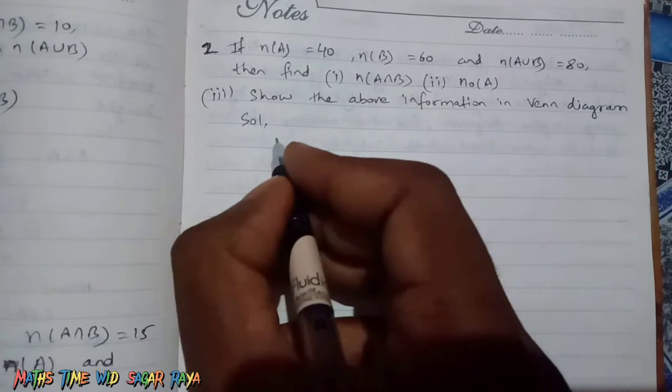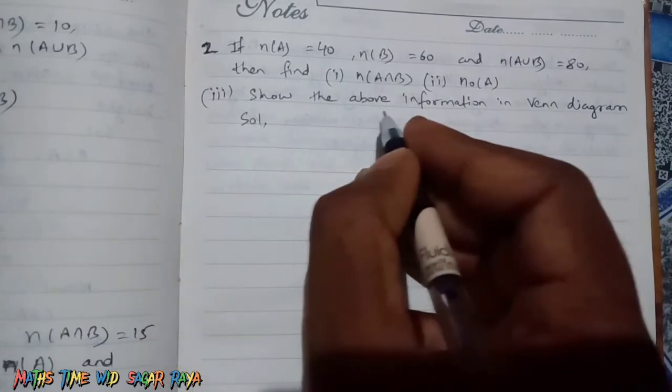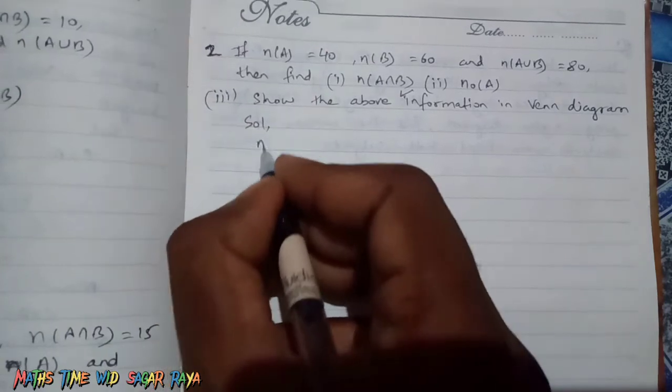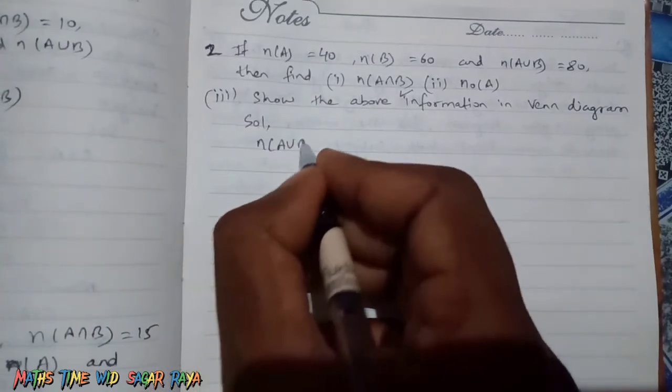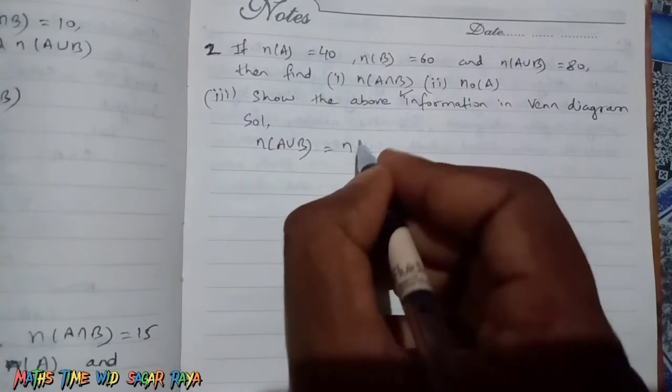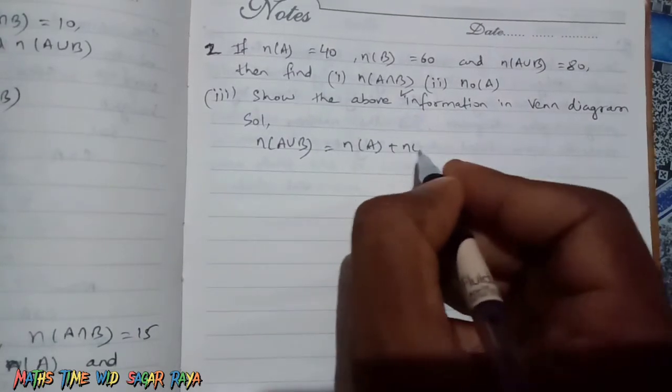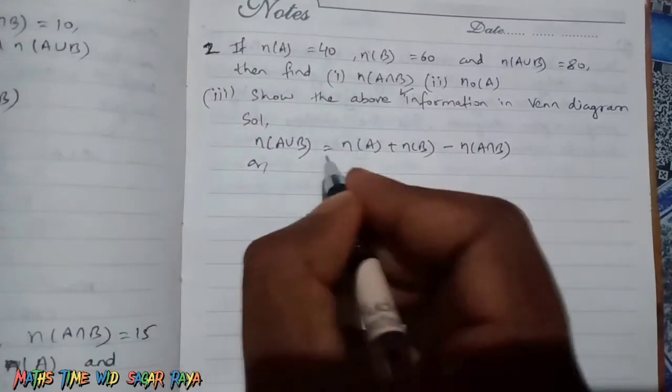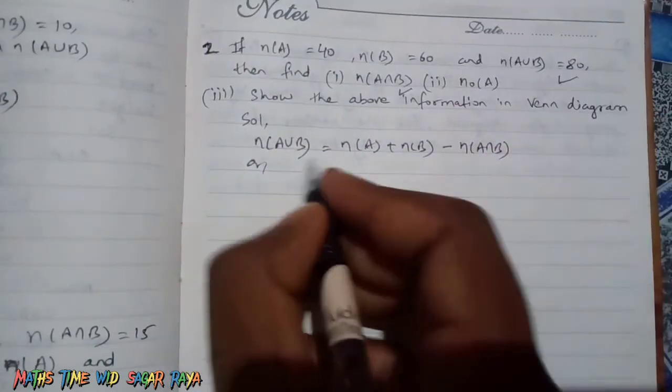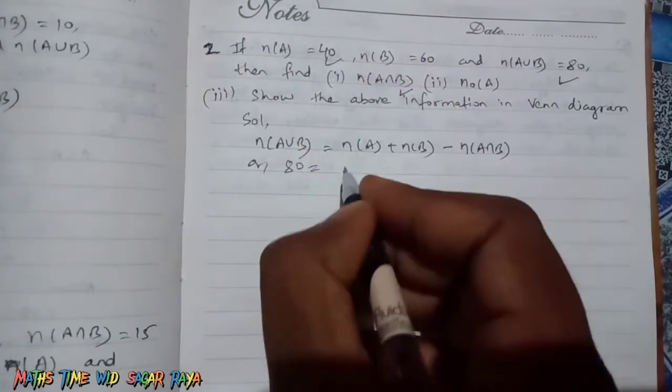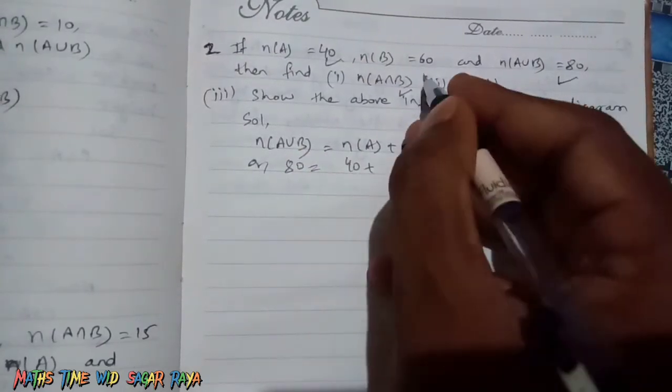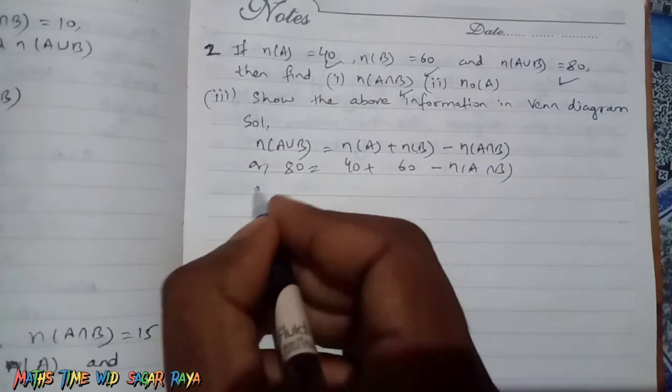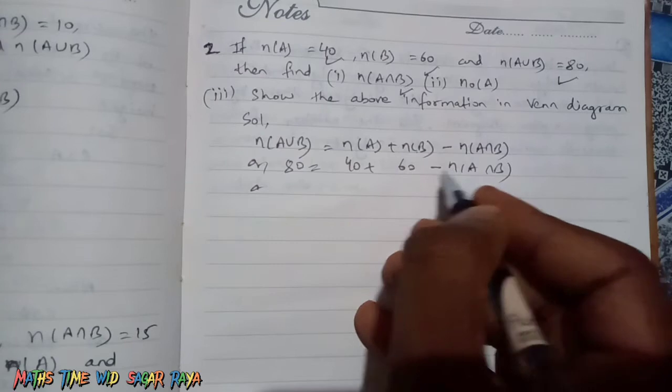First of all, let's find n(A∩B). In order to find n(A∩B), we have to write the formula of n(A∪B). So n(A∪B) = n(A) + n(B) - n(A∩B). Since n(A∪B) is given as 80, n(A) is given as 40, and n(B) is given as 60, we can find n(A∩B).